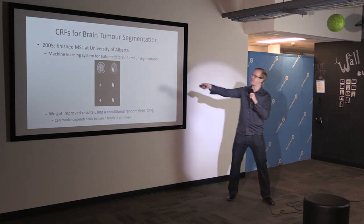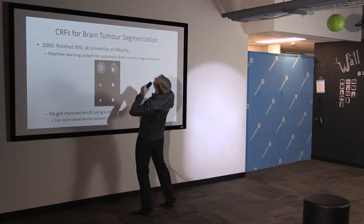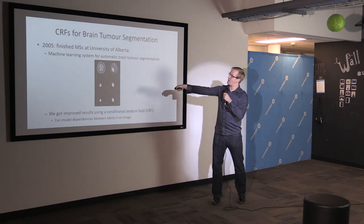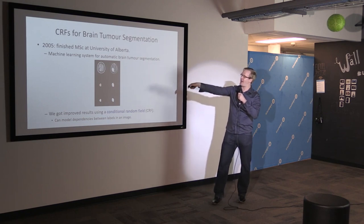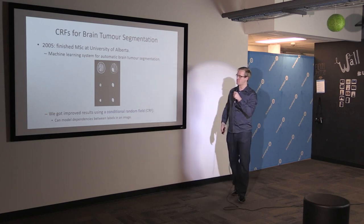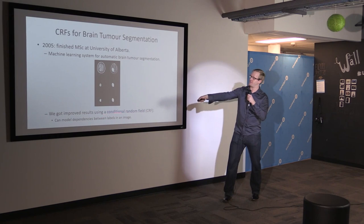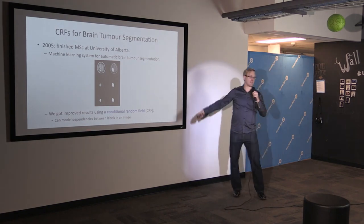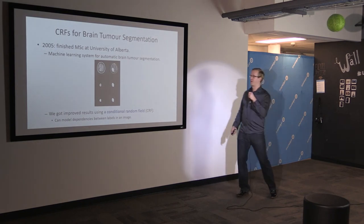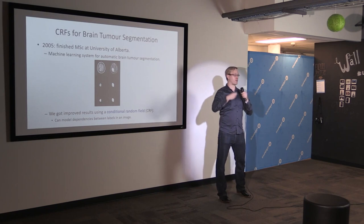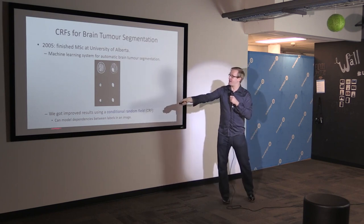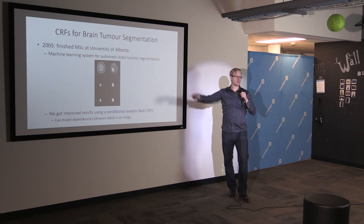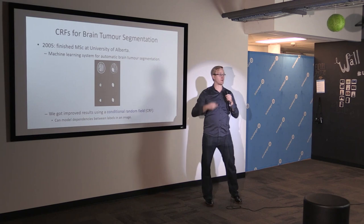We found you could do better using something called a Conditional Random Field. In 2005, CRFs were the hottest thing in machine learning — the second most cited paper in the 2000s in the machine learning world. They're coming back now because you can put a CRF on top of your deep network. The advantage is you can model dependence between labels — I can say a tumor pixel can't appear in the middle of nowhere, so adjacent pixels are likely to receive the same label.